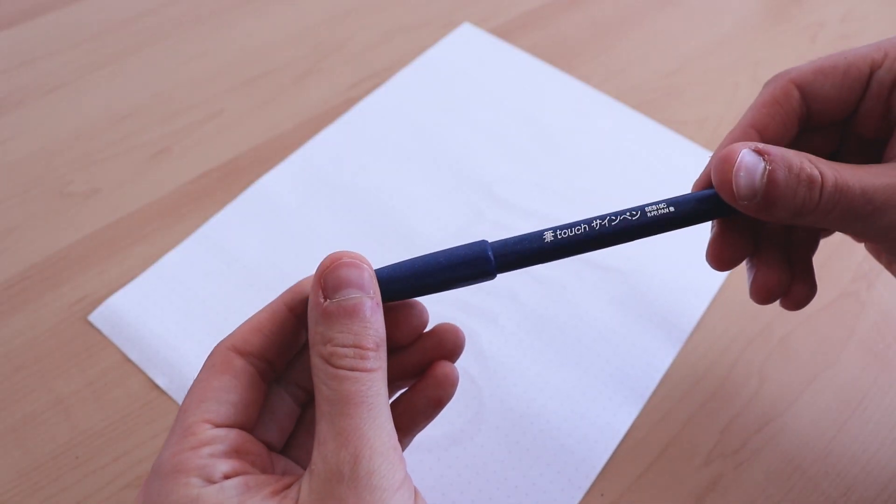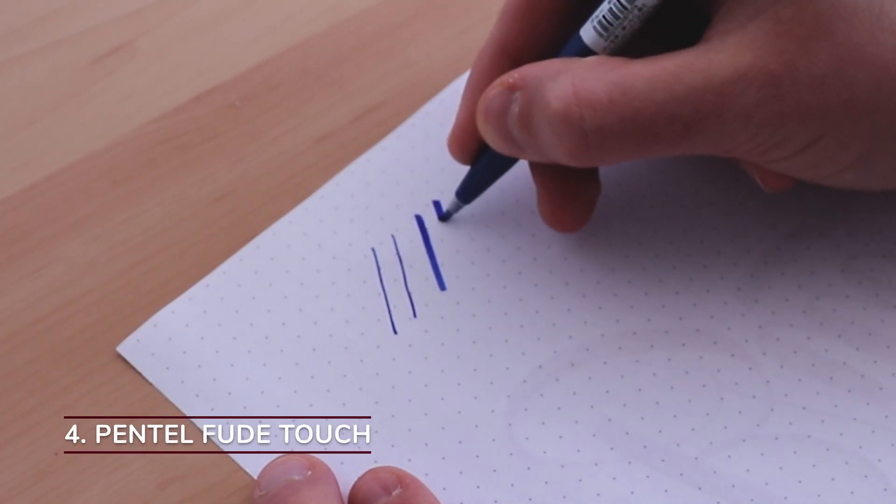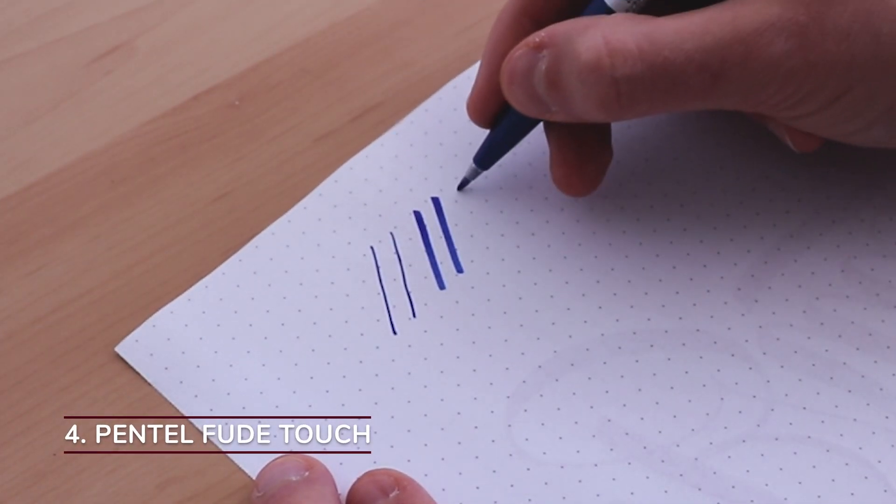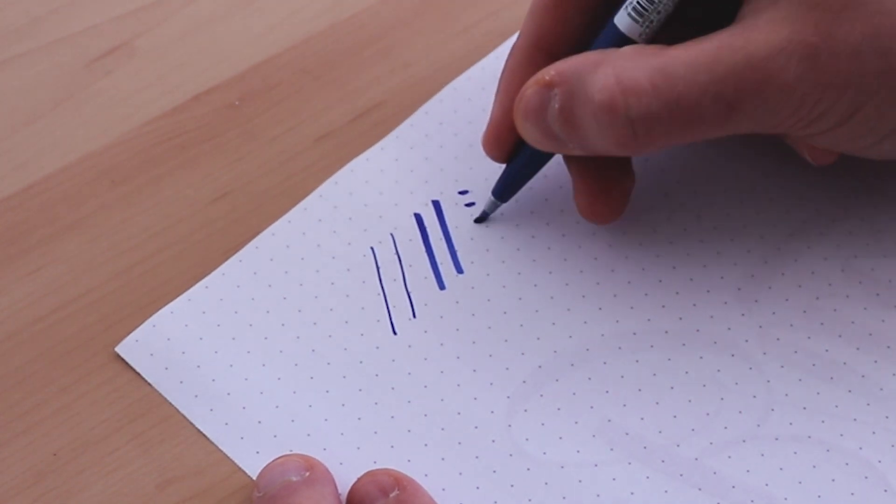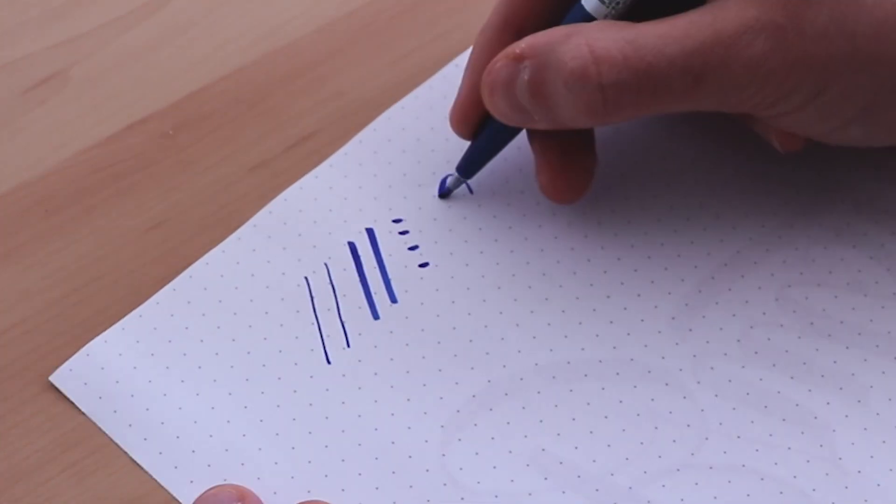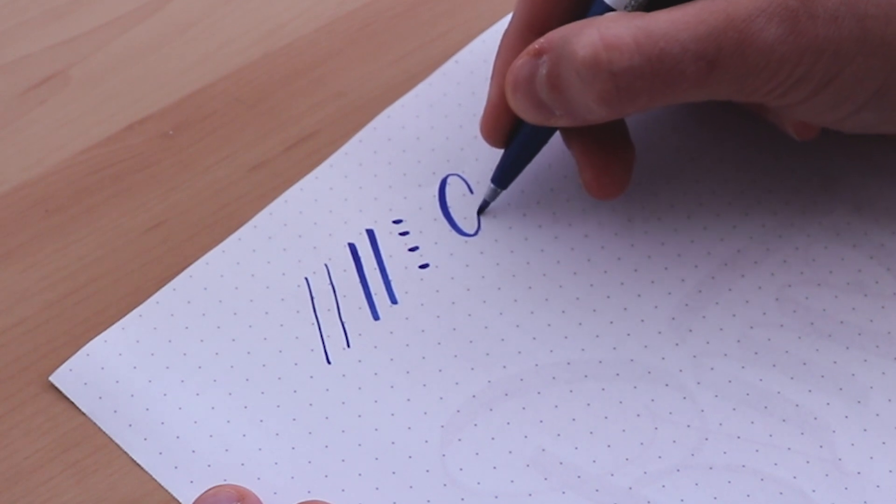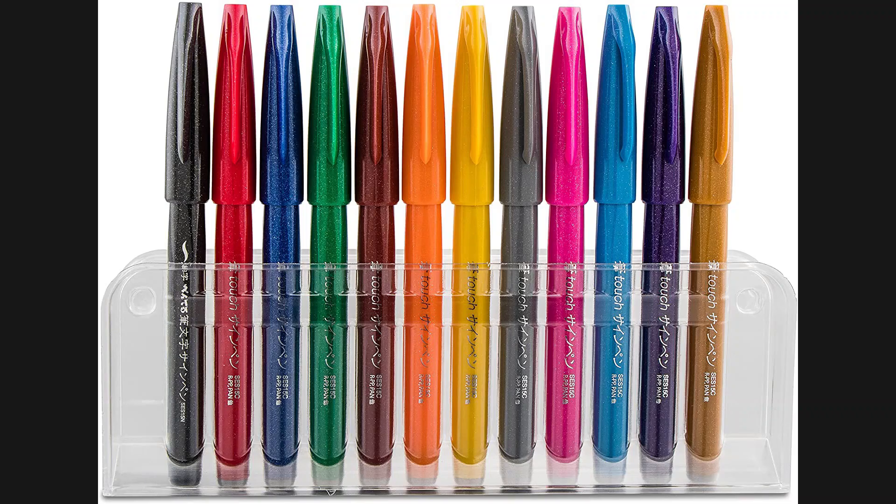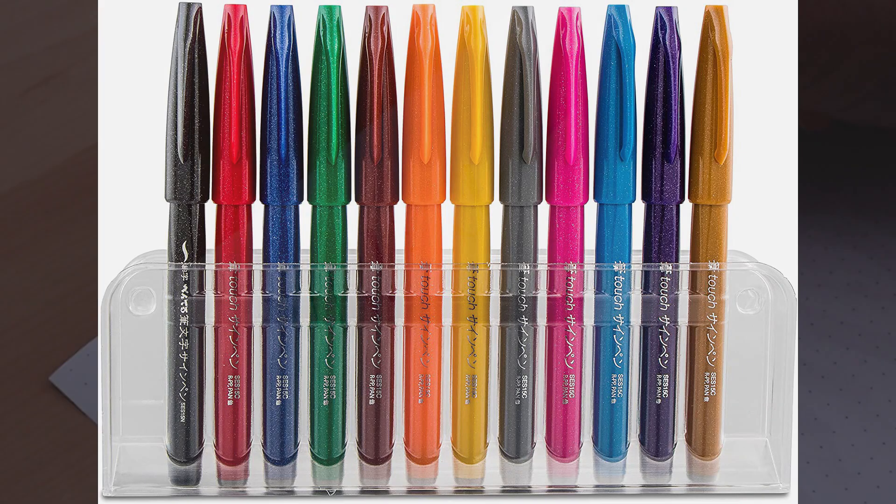Next on our list is the Pentel Fude Touch Brush Pen. The size of the nib is small, the nib elasticity is soft and doesn't require a lot of pressure. The ink flow is medium wet but it can also be dry with faster strokes. As for color choice you only have 12 colors to choose from.